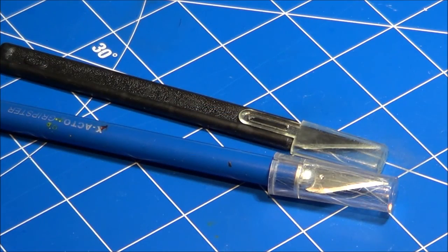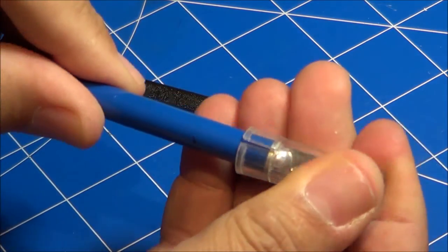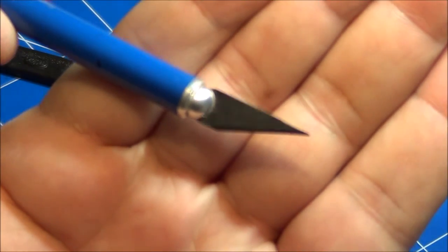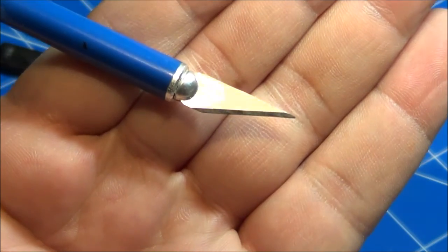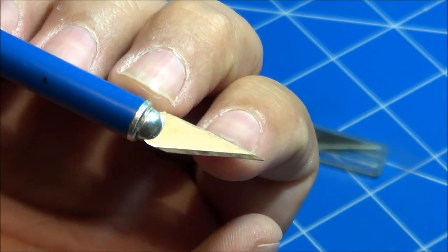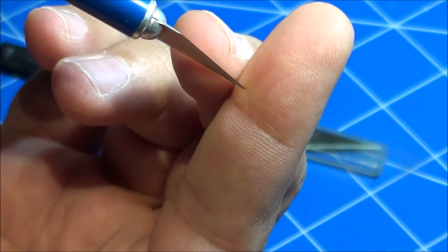Next is the Exacto blade, specifically the number 11 blade. This is a very good tool to use which most people have on hand. Typically you'd engage or make your panel line with the back side of the blade here, just the very back edge, and you drag it across to engage and make a new panel line.